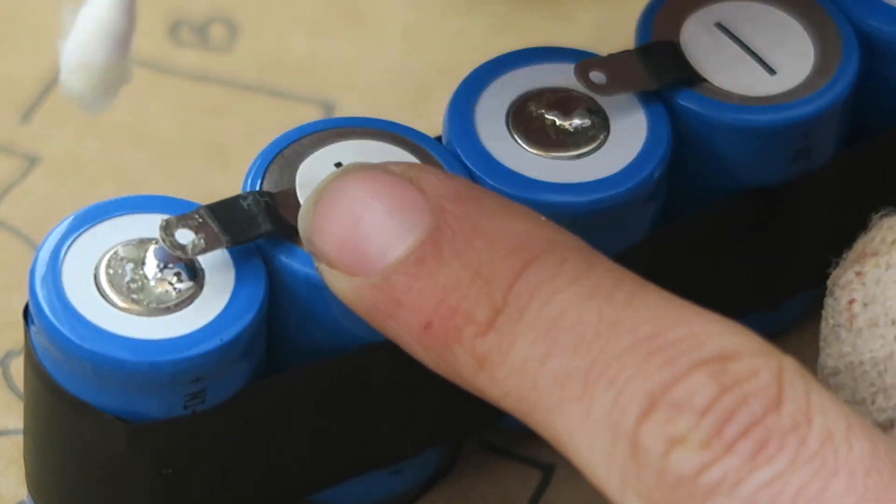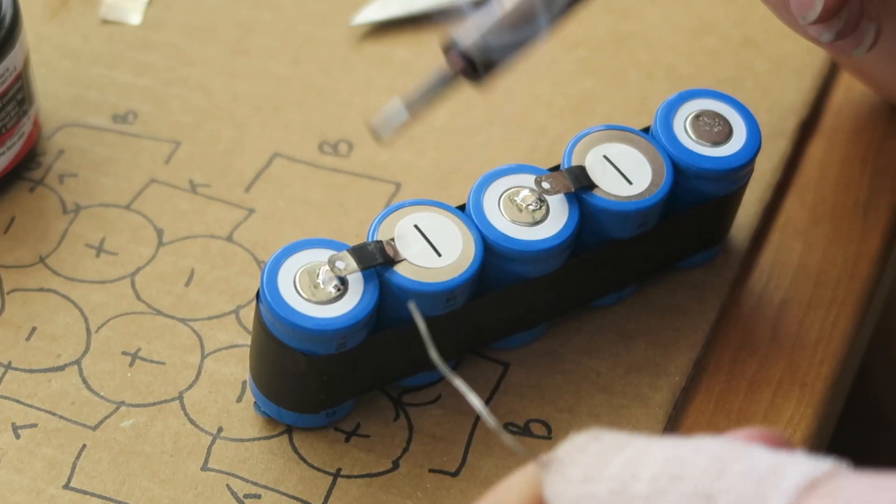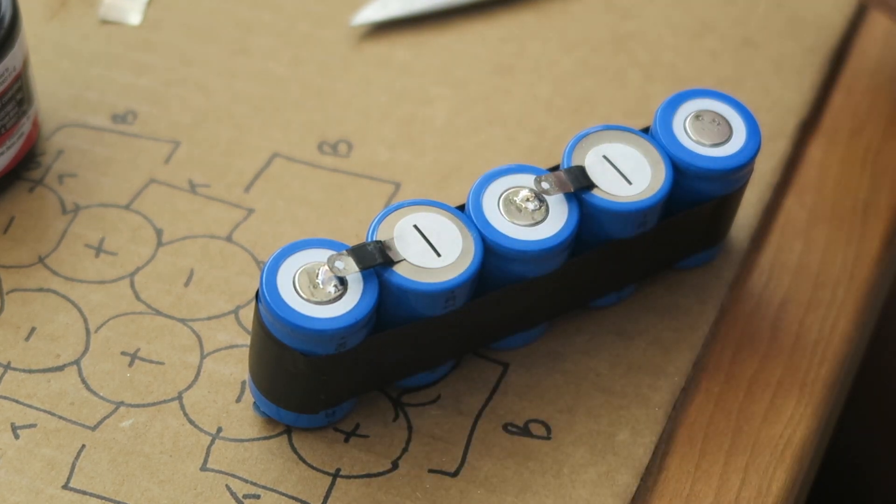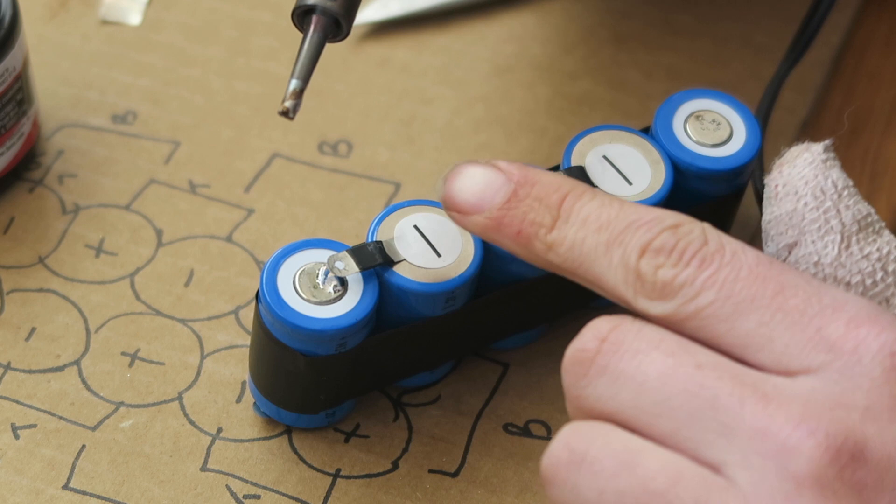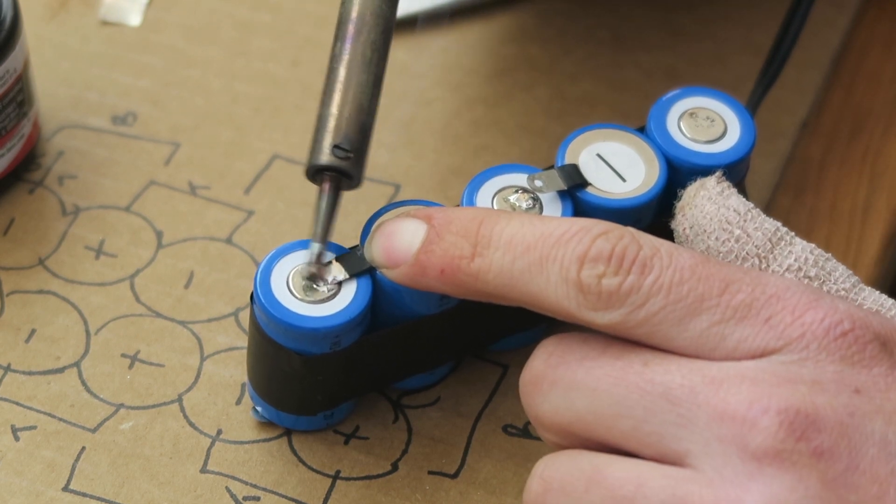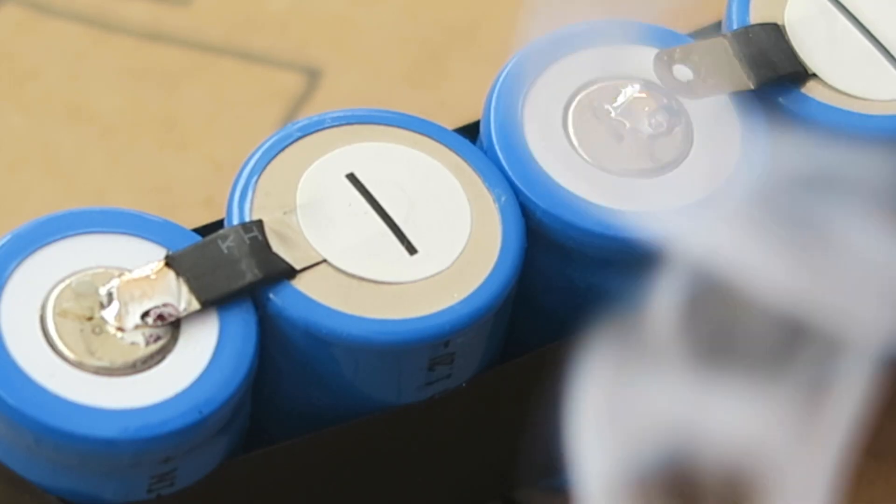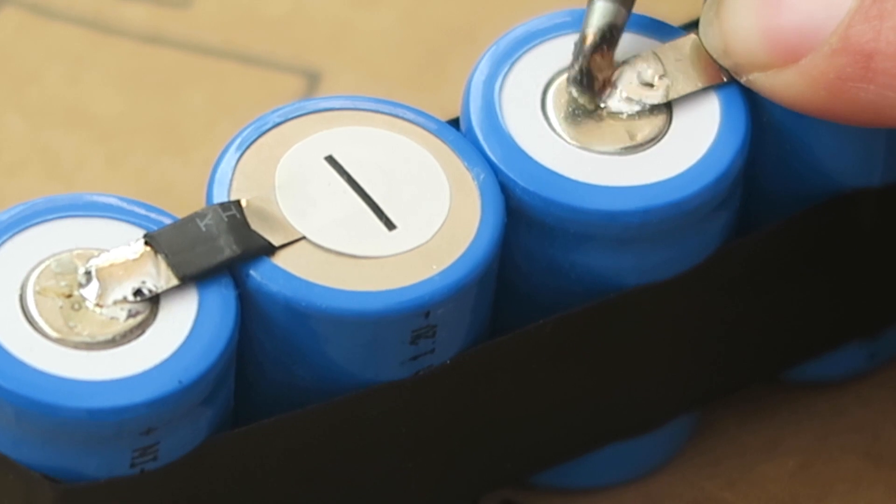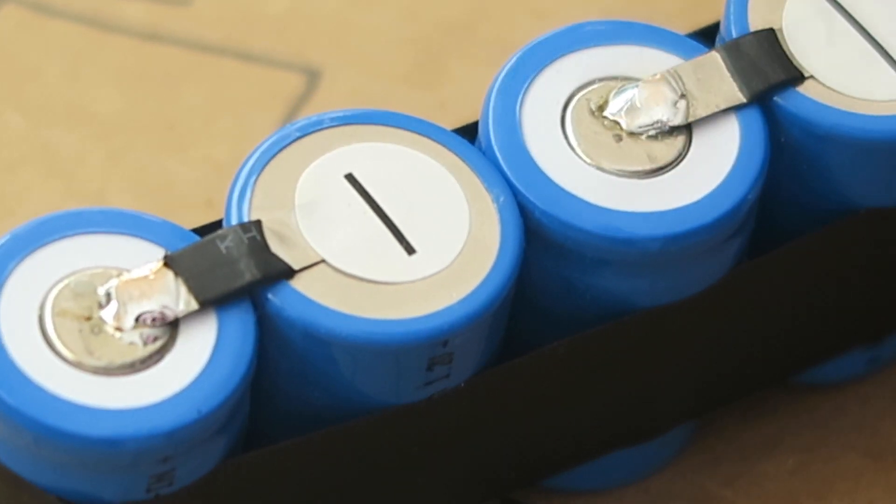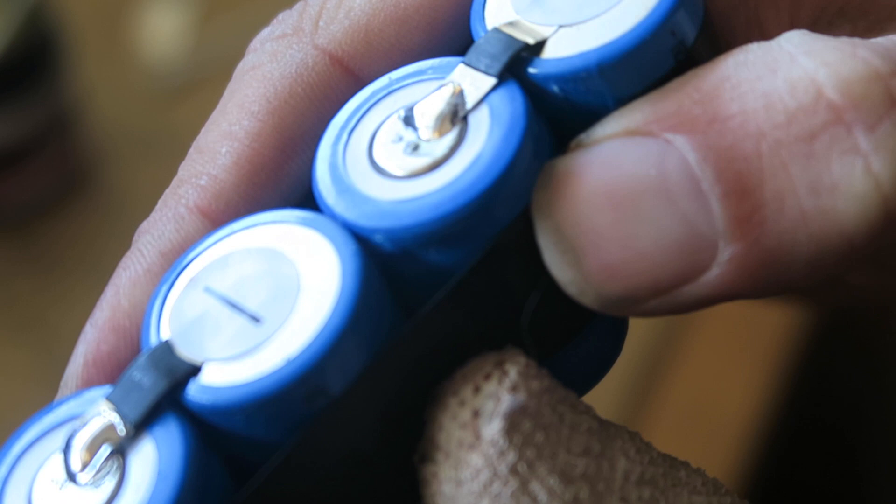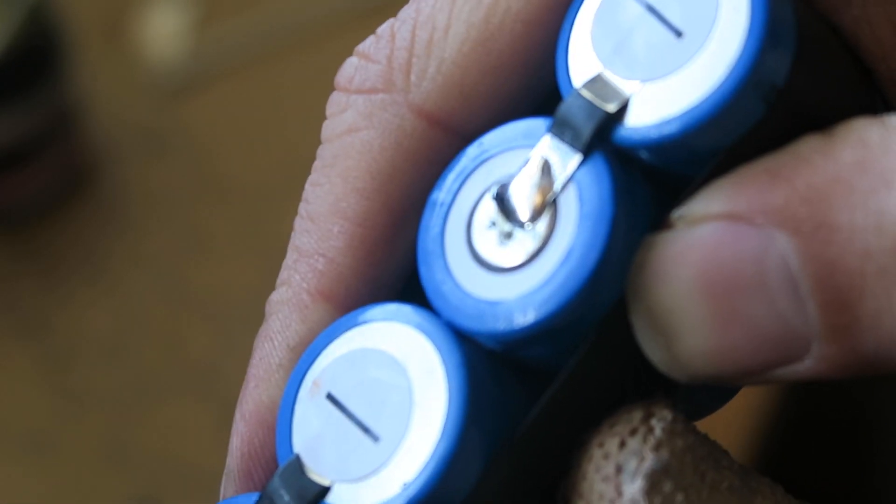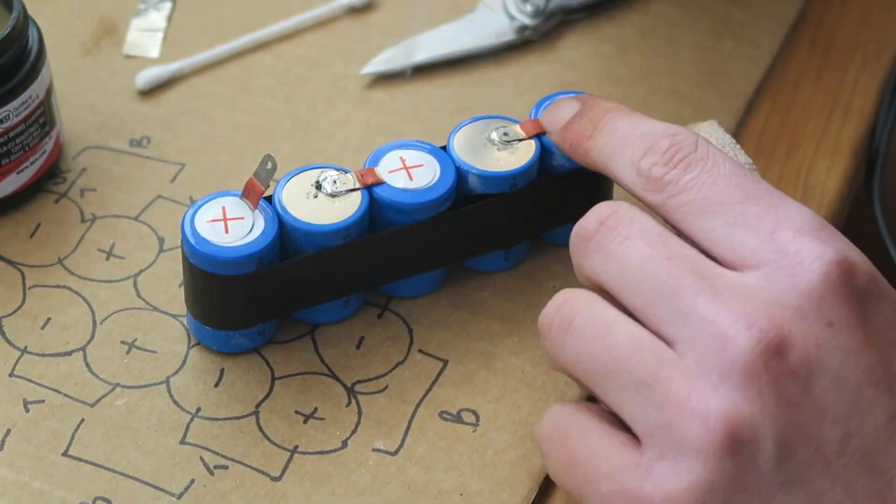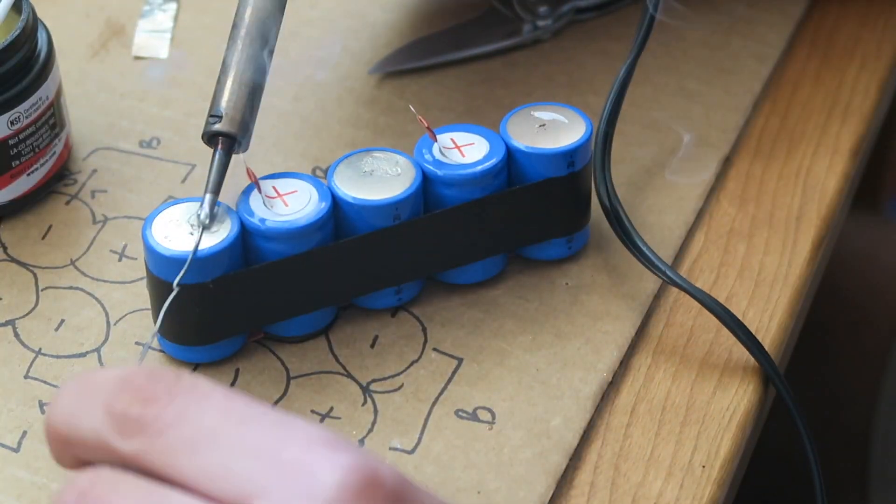Apply flux to the tabs as well. And then, you're going to put some solder on your soldering iron. And then, using a finger or toothpick, kind of push down on the tab to where you want it. And then, apply the solder on top. The flux should help it connect rather quickly, as you see here.